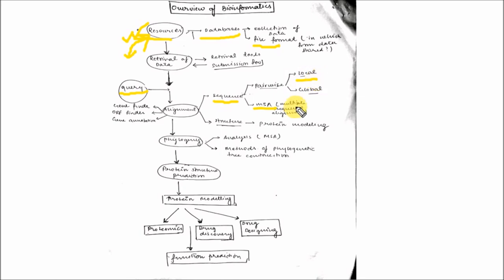After alignment, you can construct the phylogenetic trees for evolutionary studies. The MSA helps to construct the phylogenetic trees. After phylogeny, you can study the protein structure prediction by various methods: homology modeling.